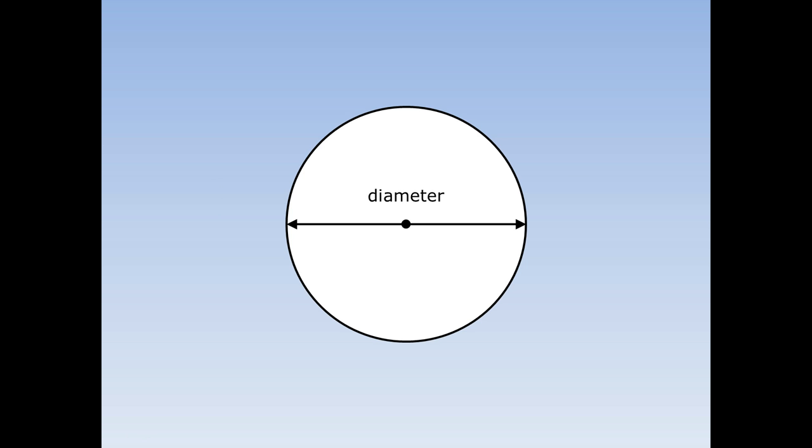Let's remind ourselves about different bits of a circle. The distance from side to side through the centre is called the diameter. The distance from the centre to the outside is called the radius. The radius is half the diameter.